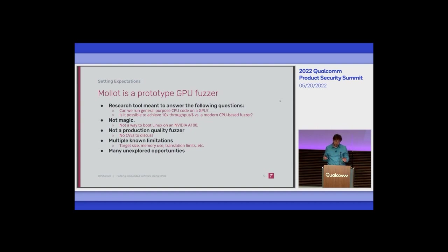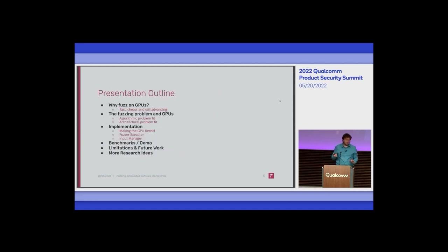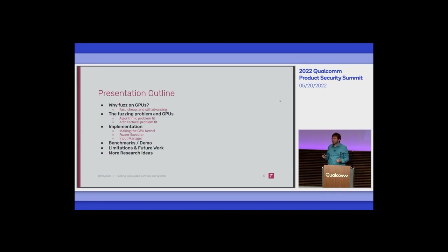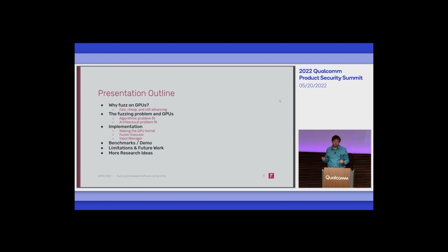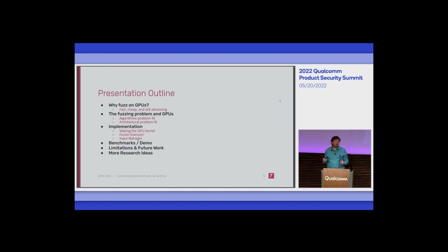A quick outline: first we'll talk about why you would ever want to fuzz on GPUs, then a quick theoretical and architectural dive into how the fuzzing problem maps to what GPUs are good at, then our implementation and what does and doesn't work, one slide on benchmarks, and finally limitations — some obvious, some not — and some really cool future research ideas.